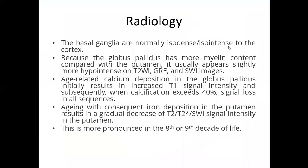Basal ganglia are normally isodense and isointense to the cortex. Because of the globus pallidus having more myelin content within the putamen, it is usually slightly more hypointense on T2. Age-related calcium deposition in the globus pallidus results in increased T1 signal intensity. When calcification is excessive, there is signal loss in all sequences. Age-related iron deposition in the putamen results in a gradual decrease in T1, T2, and signal intensity in the putamen, most pronounced in the eighth and ninth decade of life.